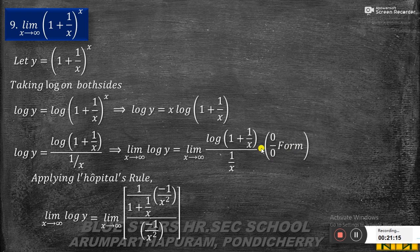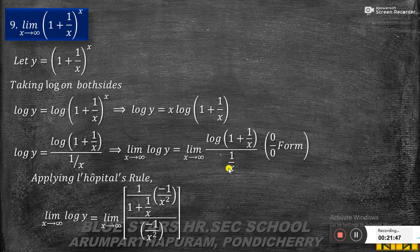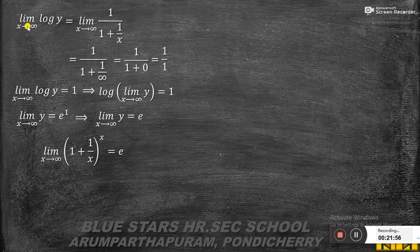Applying L'Hôpital's rule: differentiating the numerator log(1 + 1/x) gives [1/(1 + 1/x)] times (−1/x²). Differentiating the denominator 1/x gives −1/x². So these cancel, leaving limit x tends to infinity of 1 by (1 + 1/x). Substituting x equal to infinity: 1/x tends to 0, so we get 1 by (1 + 0) = 1 by 1 = 1. Therefore, limit x tends to infinity of log y equals 1.